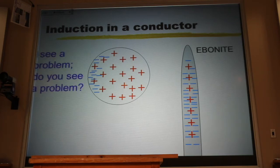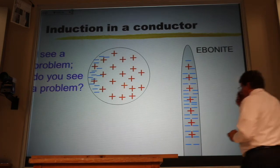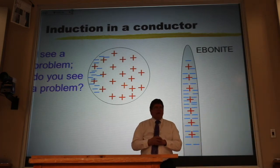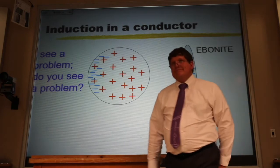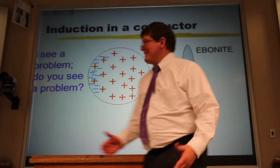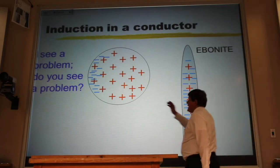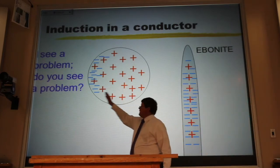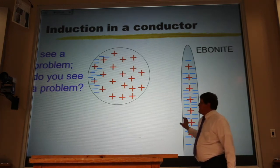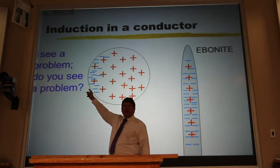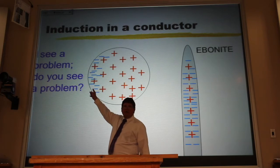Now, I see a problem. Do you see the problem? Have you ever in your life gone into a crowded elevator and found everyone in one corner? No! It doesn't happen. These negative electrons are repelled from these negative charges in the rubber rod, but they're also repelled from each other. They're not going to be stacked on top of each other like that.